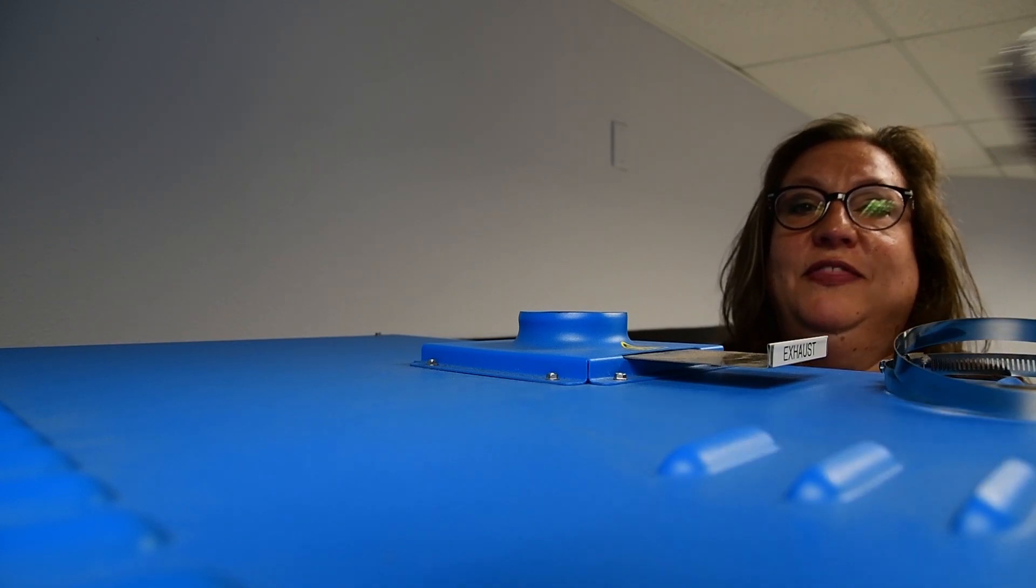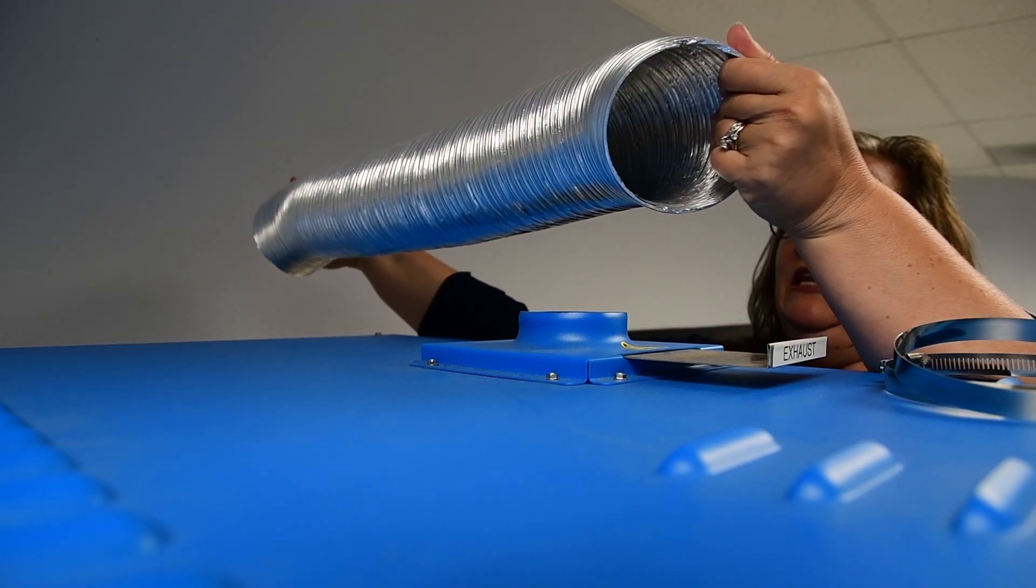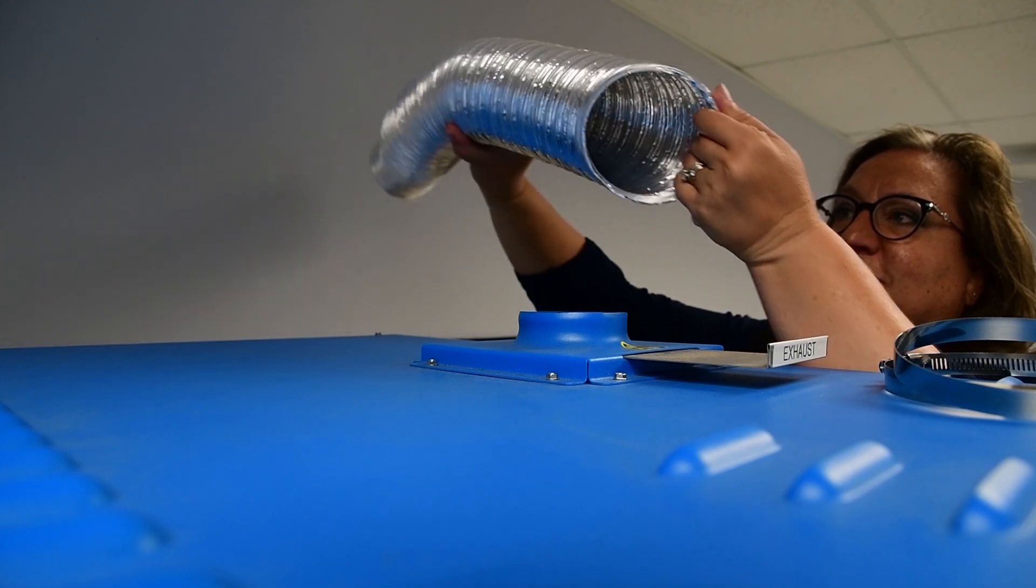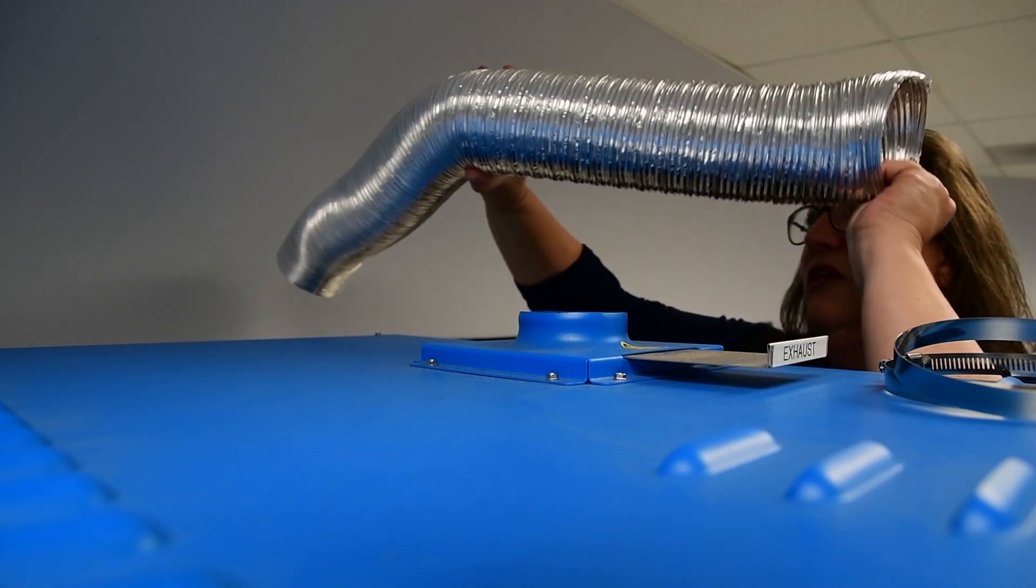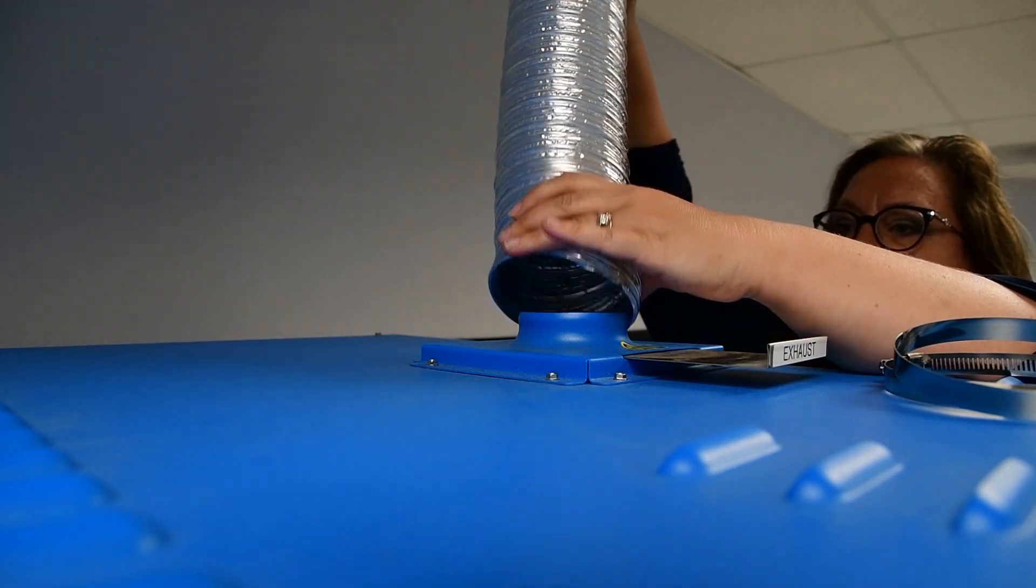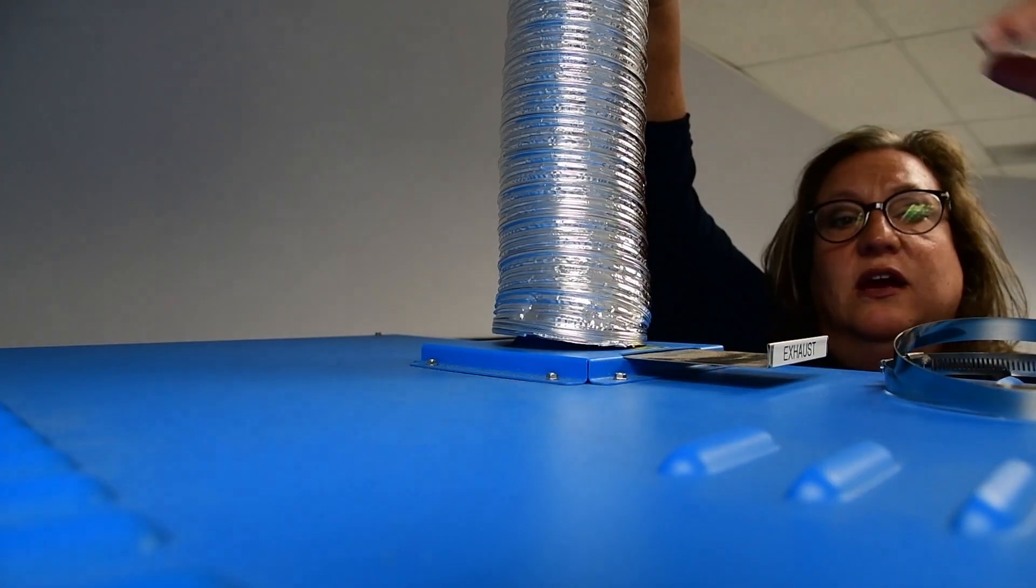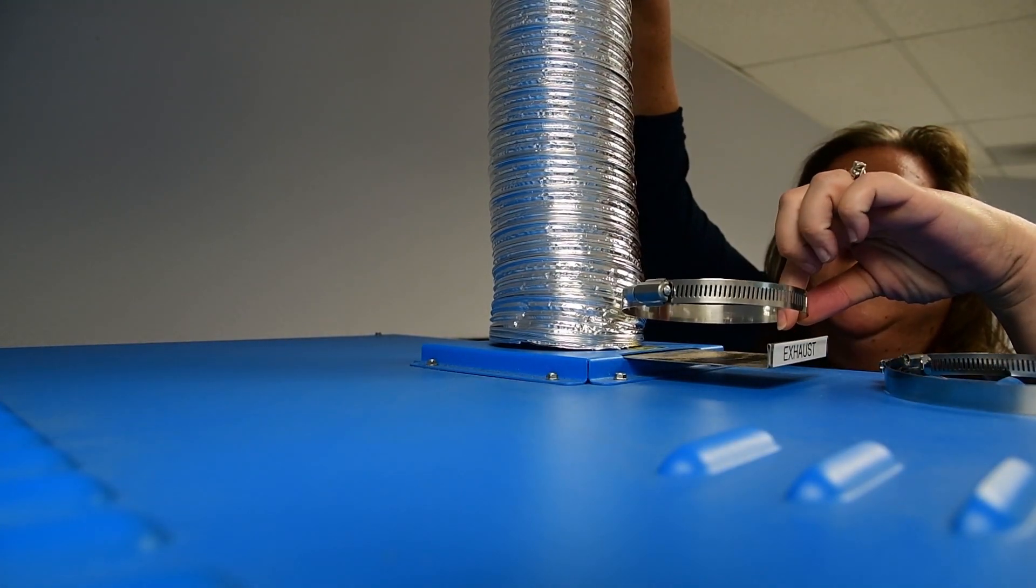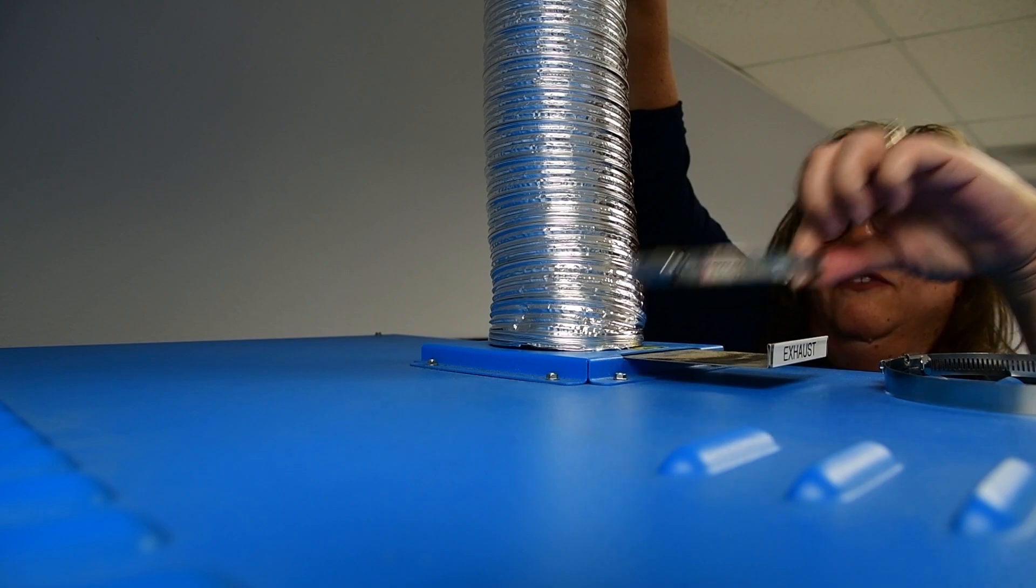They come with handy clamps and this dryer venting. So all we're going to do is open this wide up, set it right here, use one of these clamps to tighten around the vent.